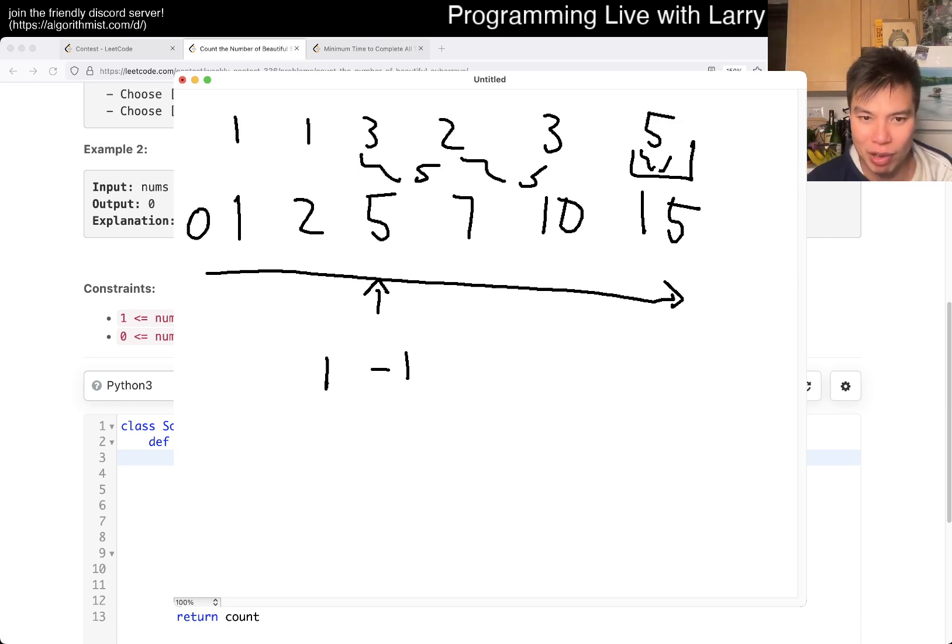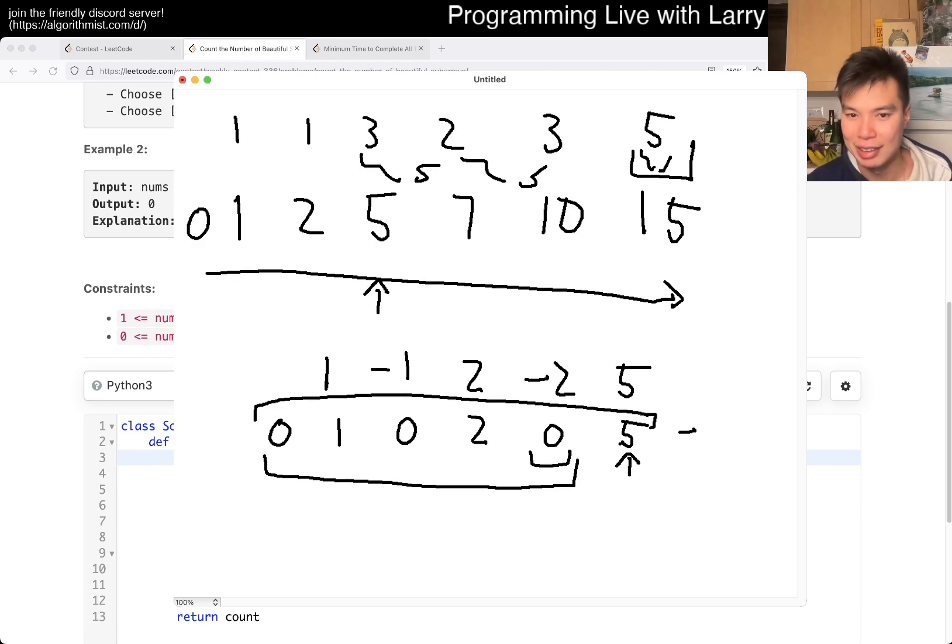So now the prefix sum is going to be 0, 1, 0, 2, 0, 5. Let's say you're here - you know that every previous occurrence of 0 is going to give you a subarray sum of 5. Because this 0 means that this prefix gets subtracted from this prefix equals 5. Same thing here: this 0 means that this prefix minus this prefix is going to be 5. That's the idea behind prefix sum dynamic programming.